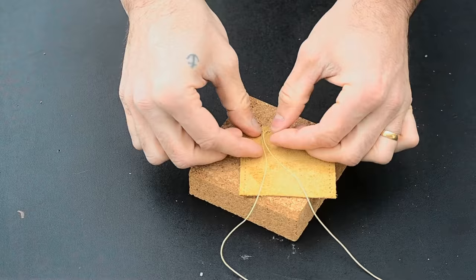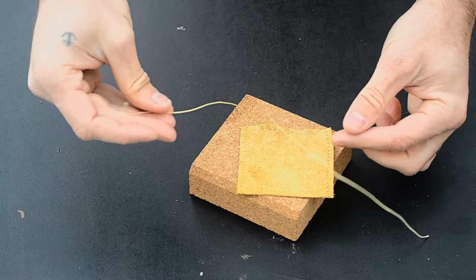On your last stitch there you should have two threads on the same side right next to each other. One simple way of finishing your threads is to tie a knot like a square knot.